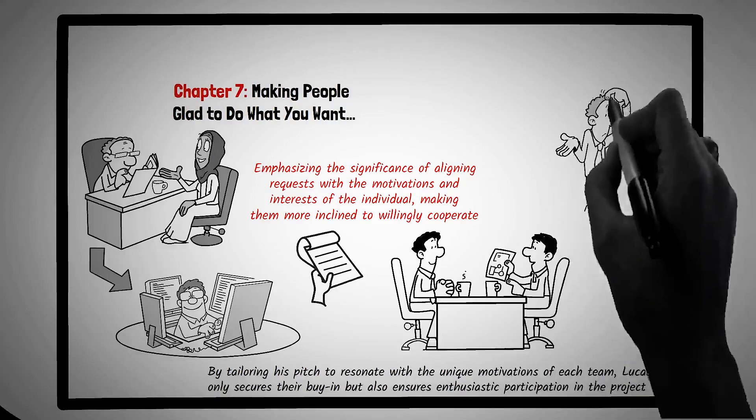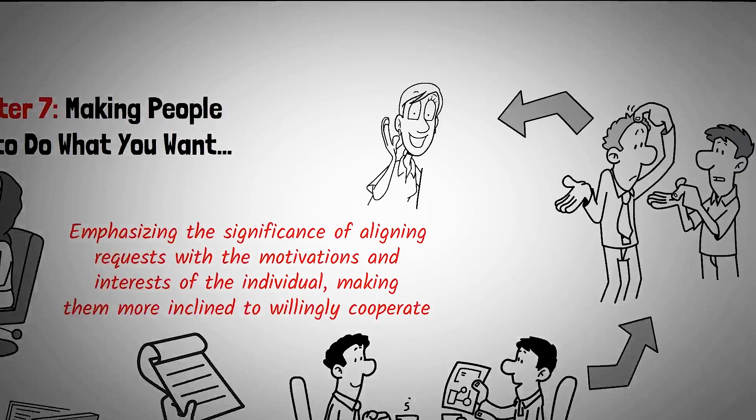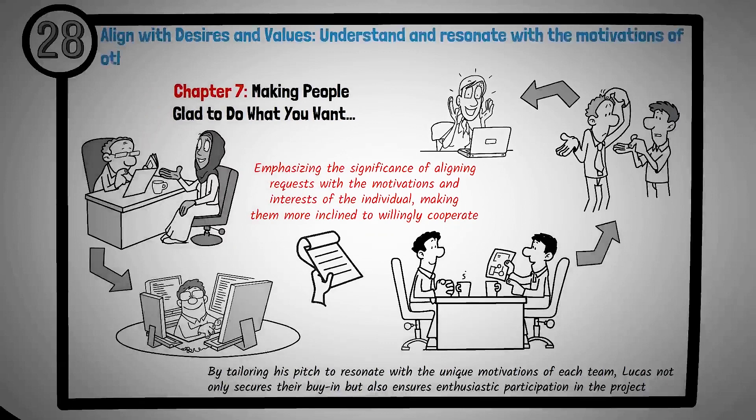When seeking cooperation or trying to persuade someone, take a moment to understand their perspective, desires and values. Tailor your approach to align with their motivations, making your request more compelling and relevant to them. True persuasion isn't about manipulation, it's about alignment. By understanding and resonating with the motivations of others, we can foster genuine cooperation and make individuals glad to participate. Principle number twenty-eight is align with desires and values. Understand and resonate with the motivations of others to foster genuine cooperation and enthusiasm.